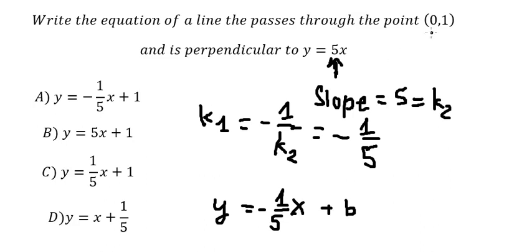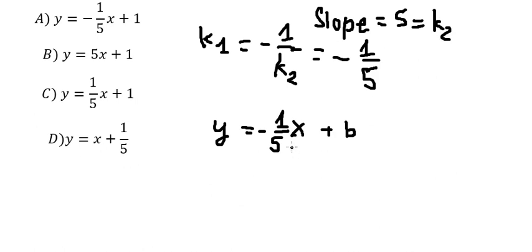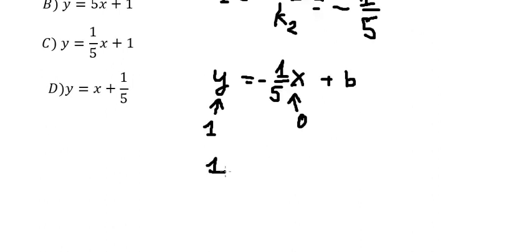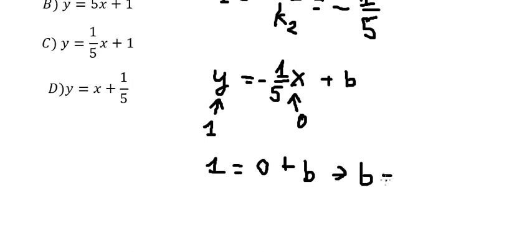Next, we know that the line goes through the point (0, 1). So x is zero and y is one. We put zero here and one here to find the value of b. Negative one over five multiplied by zero gives us zero, and so b equals number one.